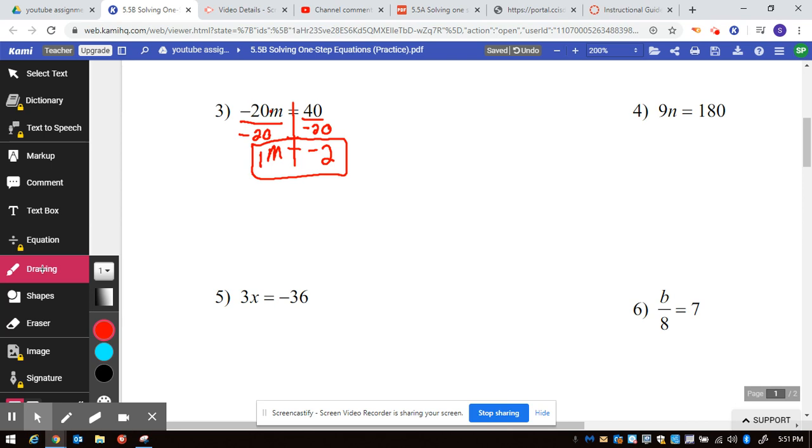Looking at number 6, the opposite of divide is to multiply. So 8 times 8, that gives us 1b. What you do to one side, you must do to the other. So 7 times 8 is 56.